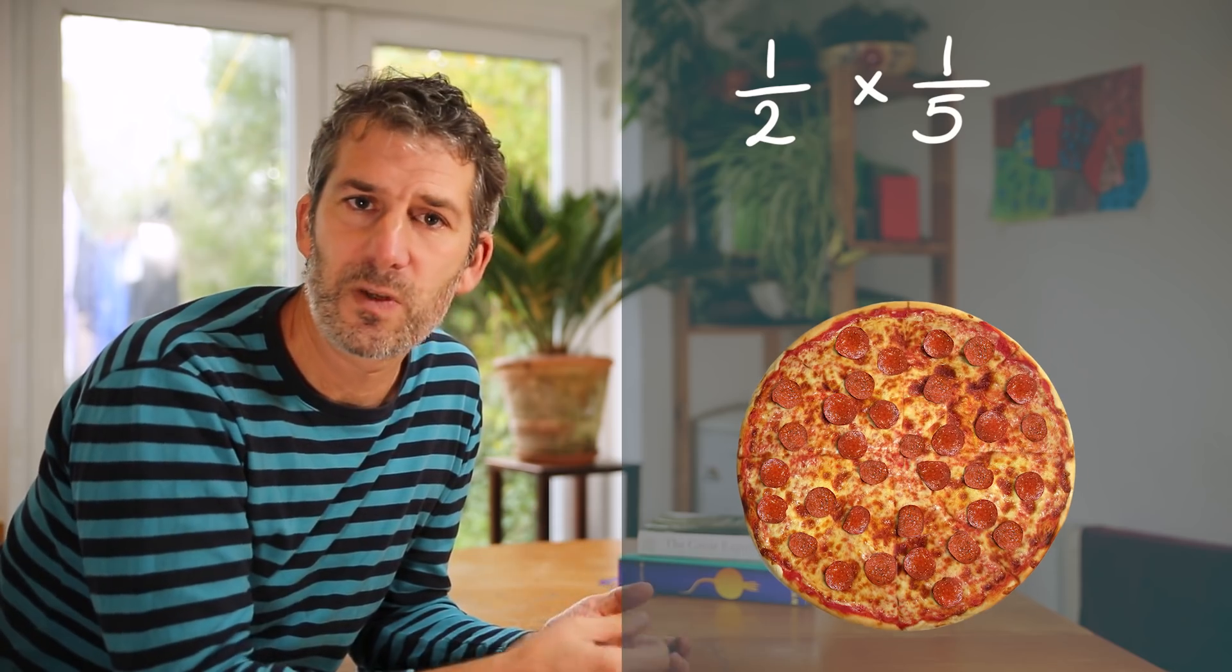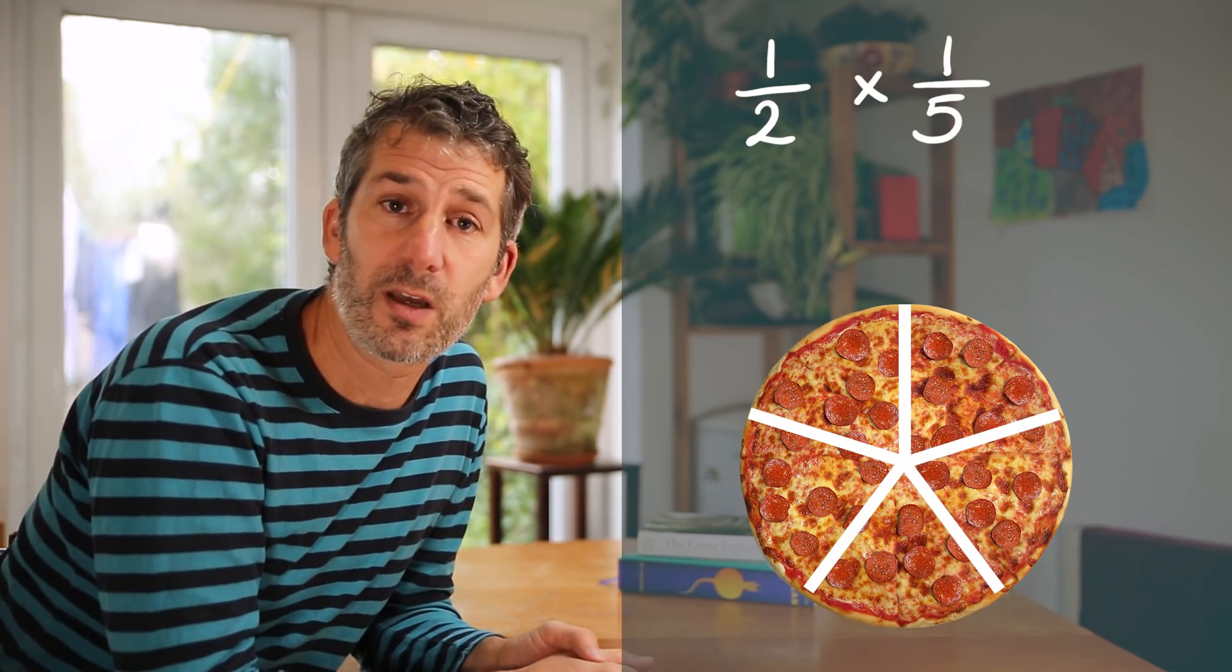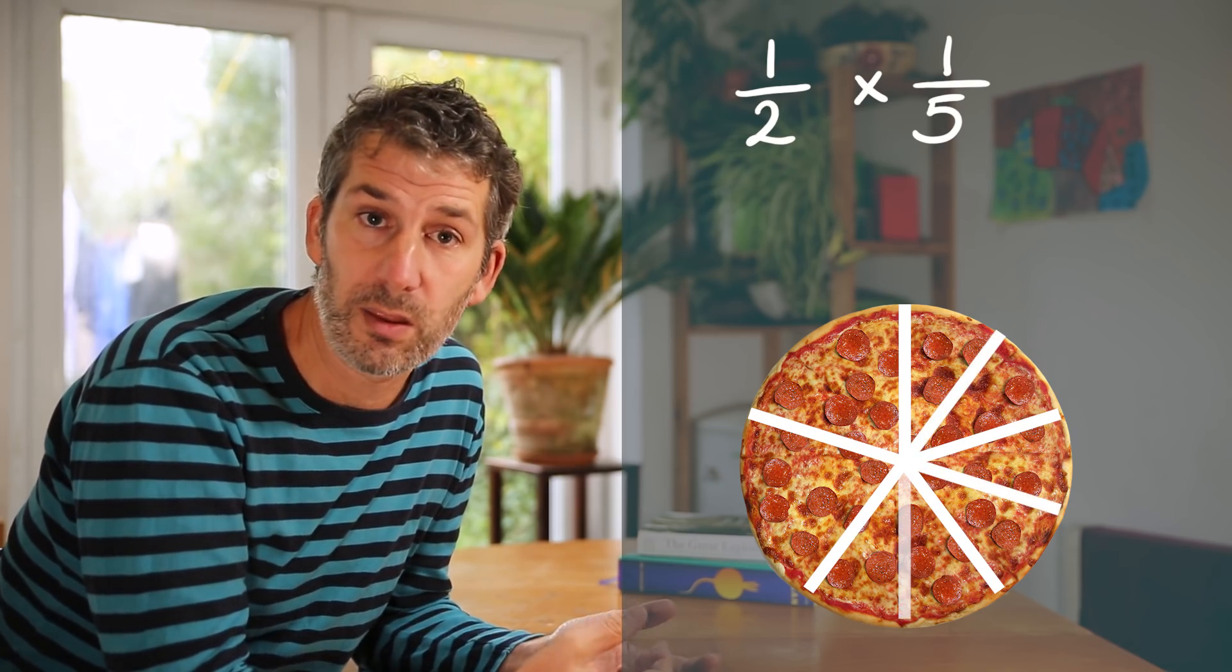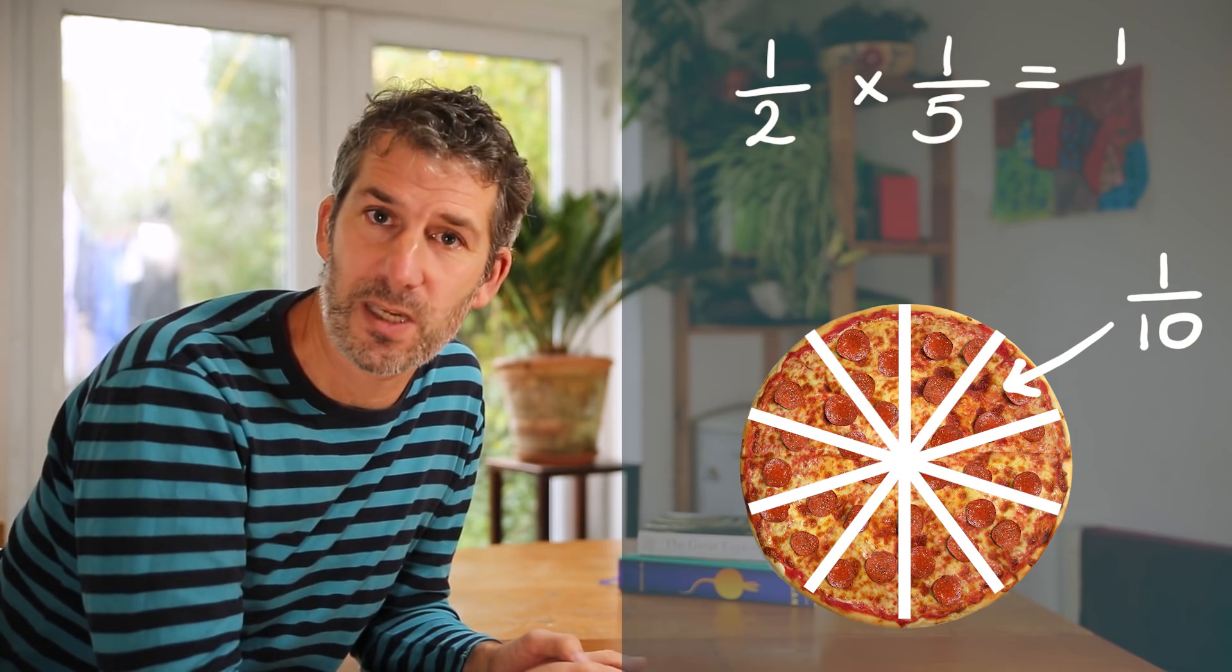What about half times a fifth? Well in this case we need to half each of those fifths. And if we do that we end up with ten pieces. Each one being one tenth of the pizza. So a half times a fifth is one tenth.